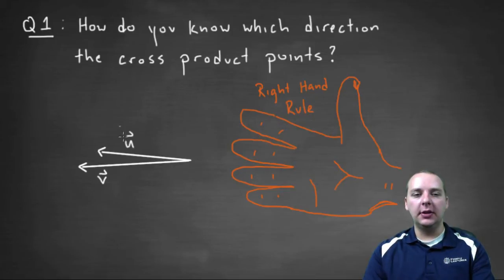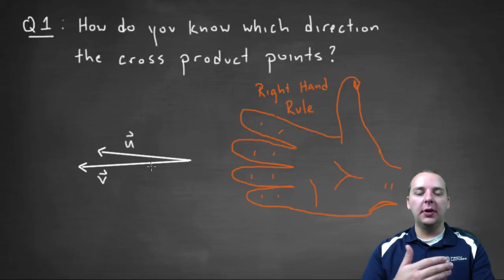So look at these two vectors here. Here's vector u, and that's supposed to be in the background, and here's vector v, which is supposed to be a little closer to us, the way that I drew it.